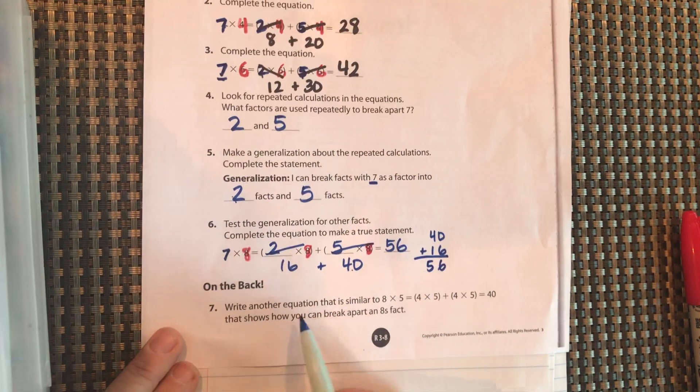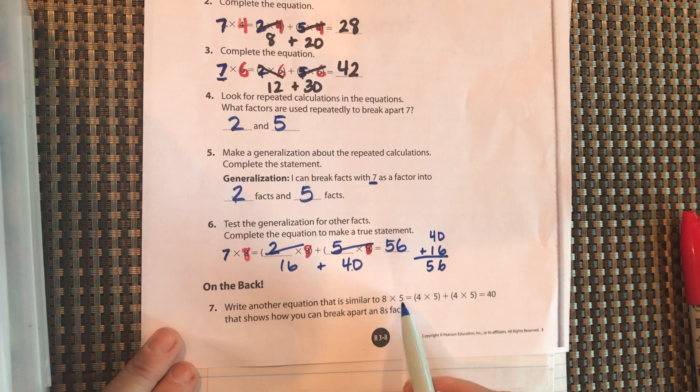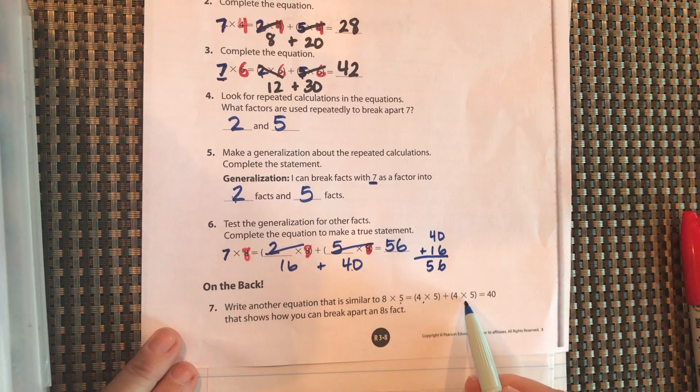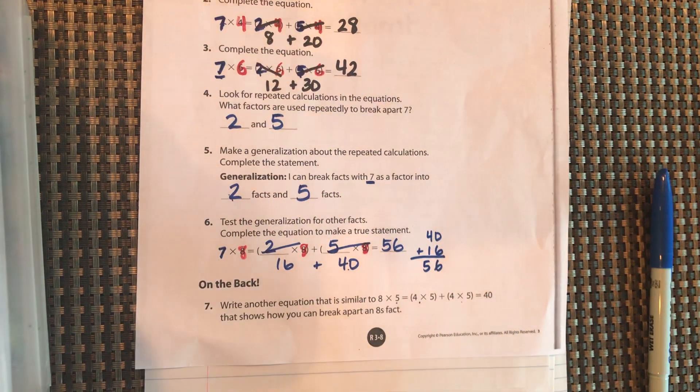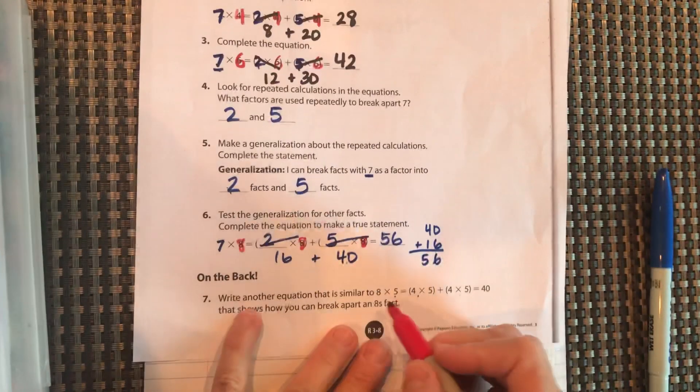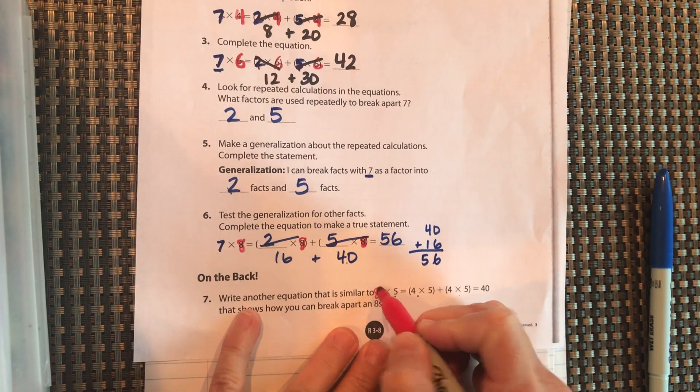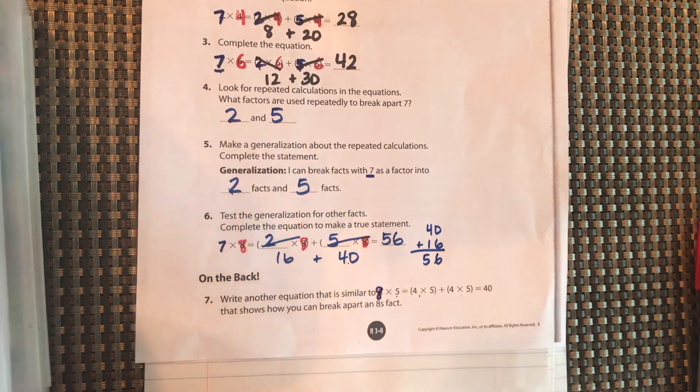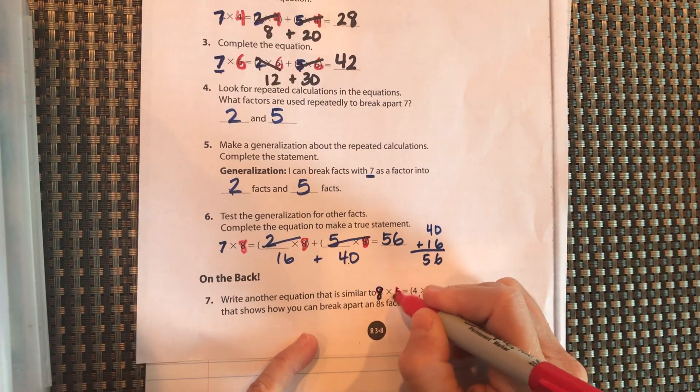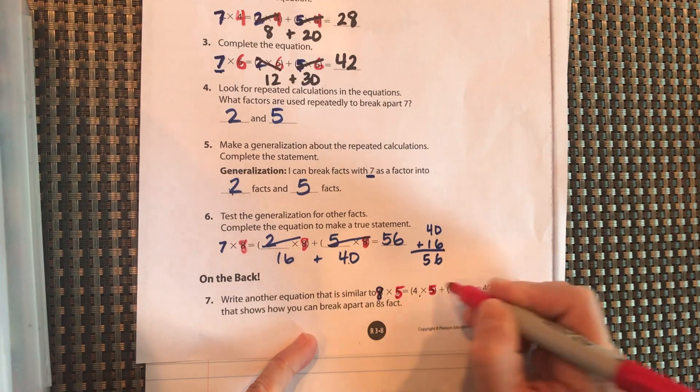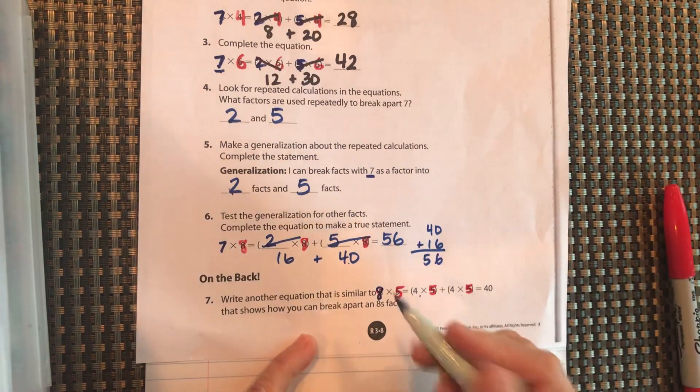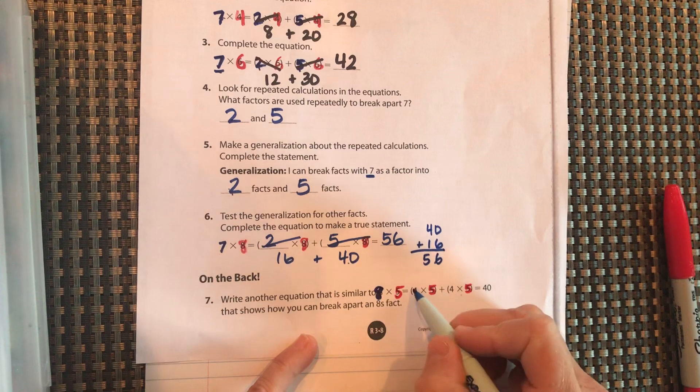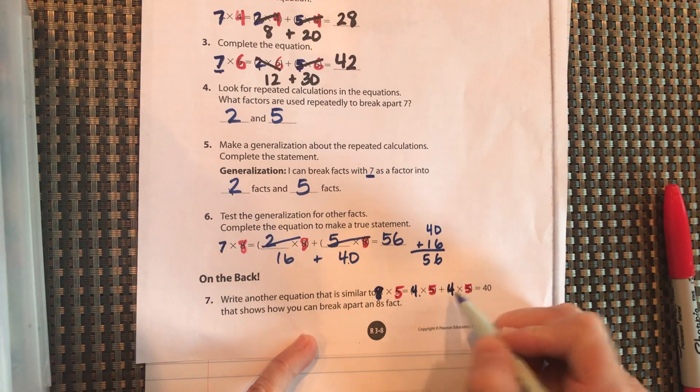Write another equation that is similar to 8 times 5 is equal to 4 times 5 and 4 times 5 that shows how you can break apart your 8's facts. Okay, so 8 groups of 5. Our 5 stayed the same. And this 8, we broke up into 4 and 4.